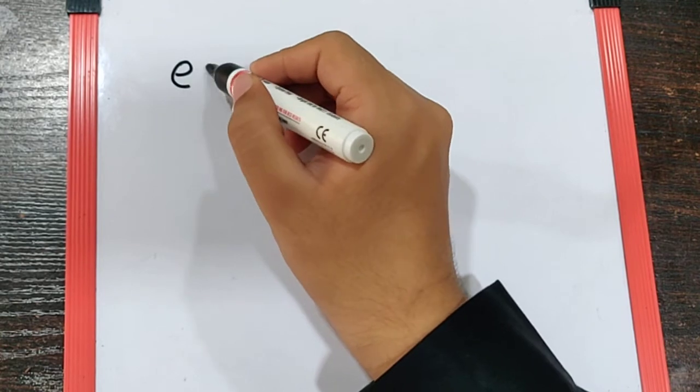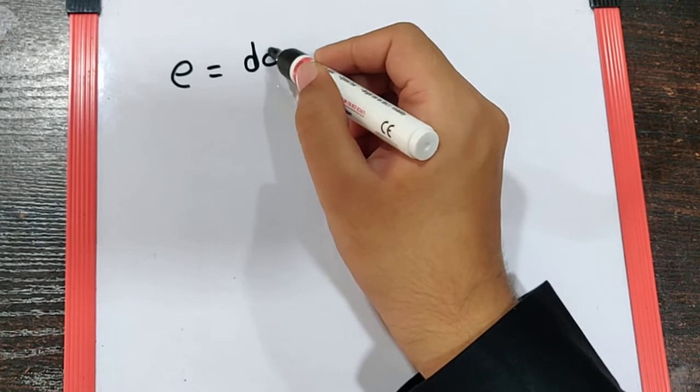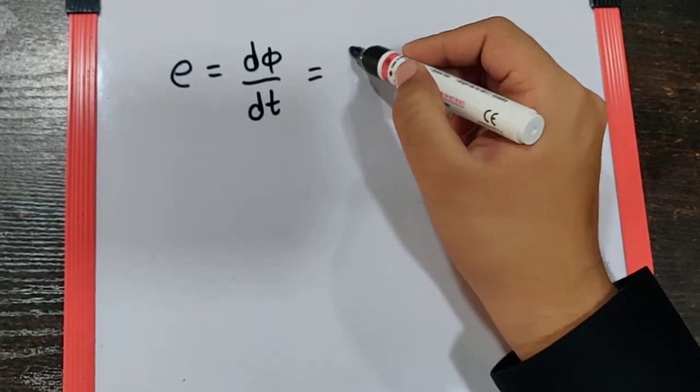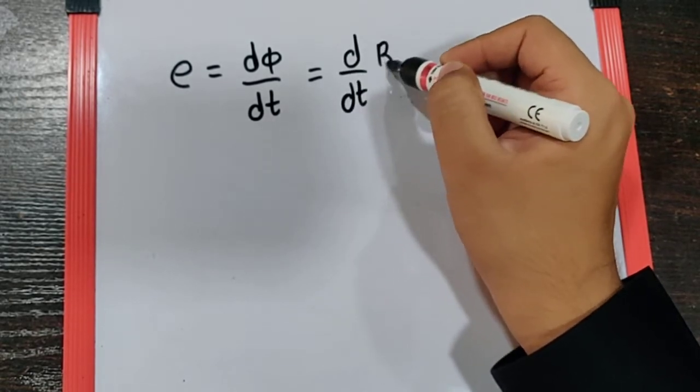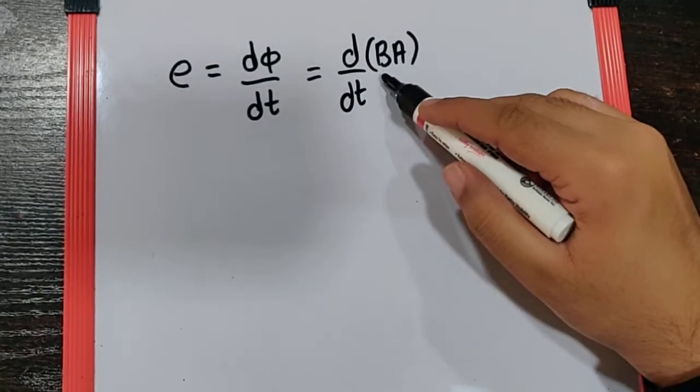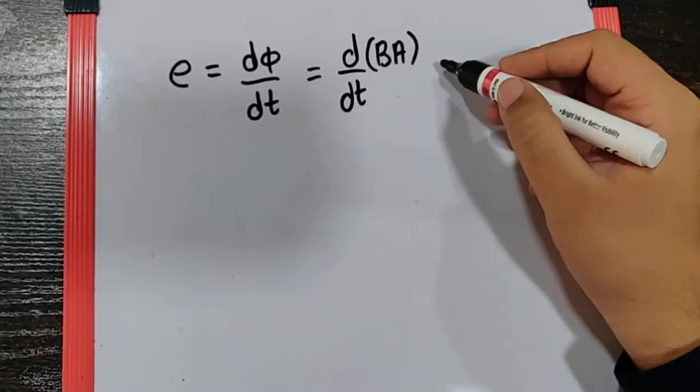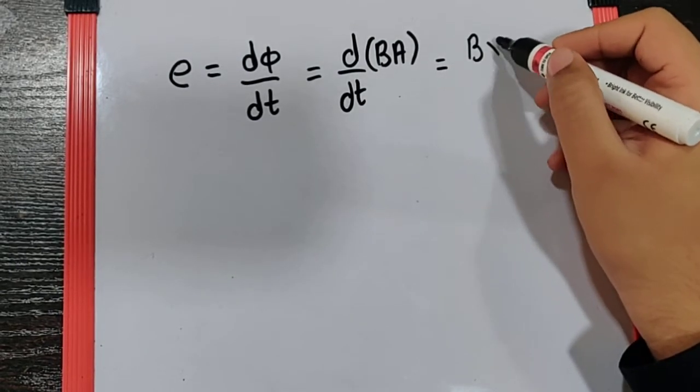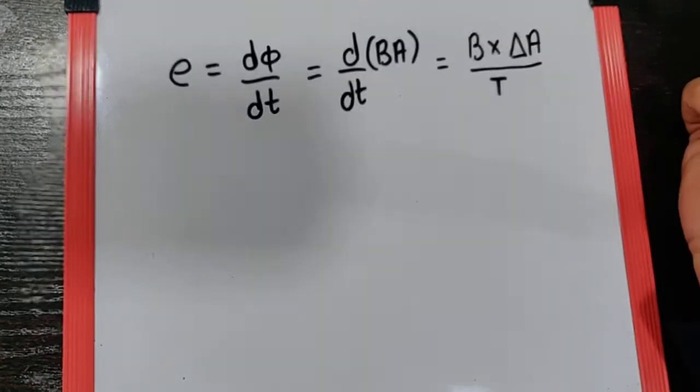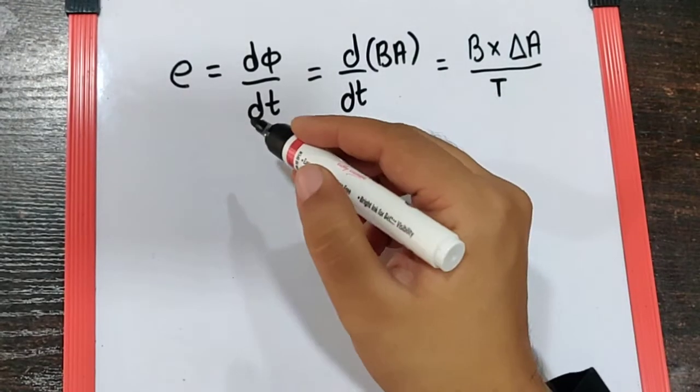In general, the flux is B into A, that is the magnetic field which is constant over here, and the A which is the area which is changing over here. So we can say it is nothing but B into changing area in the given time. Now first we need to find the changing area.